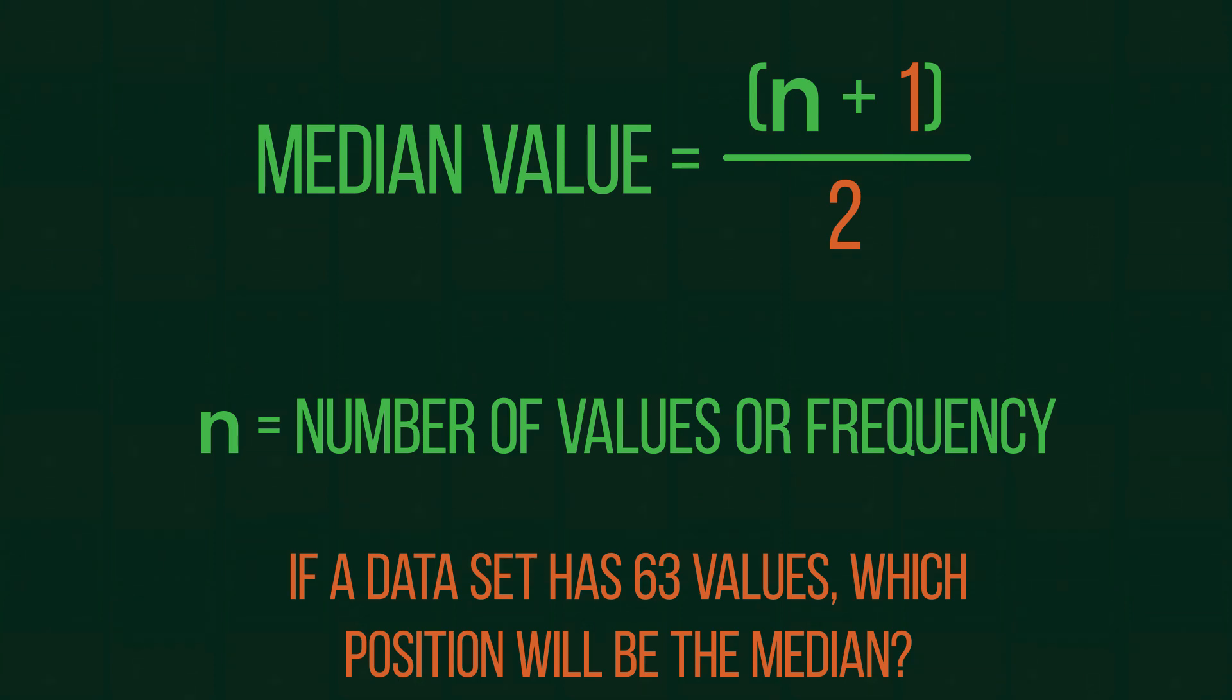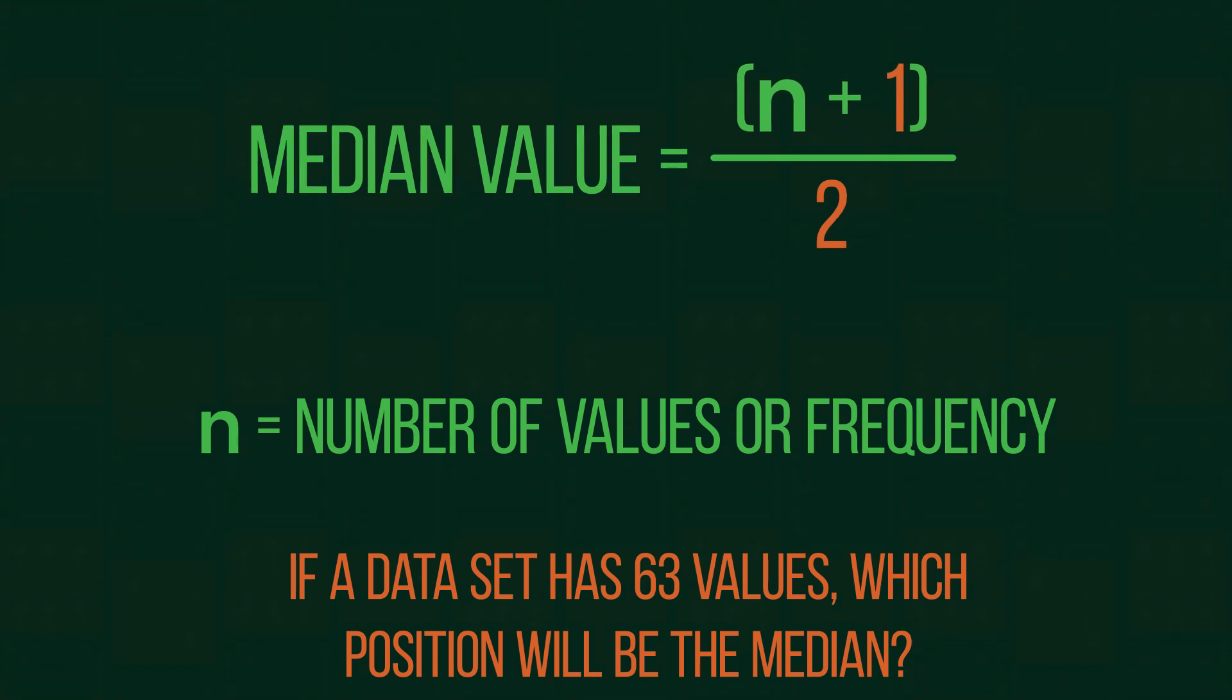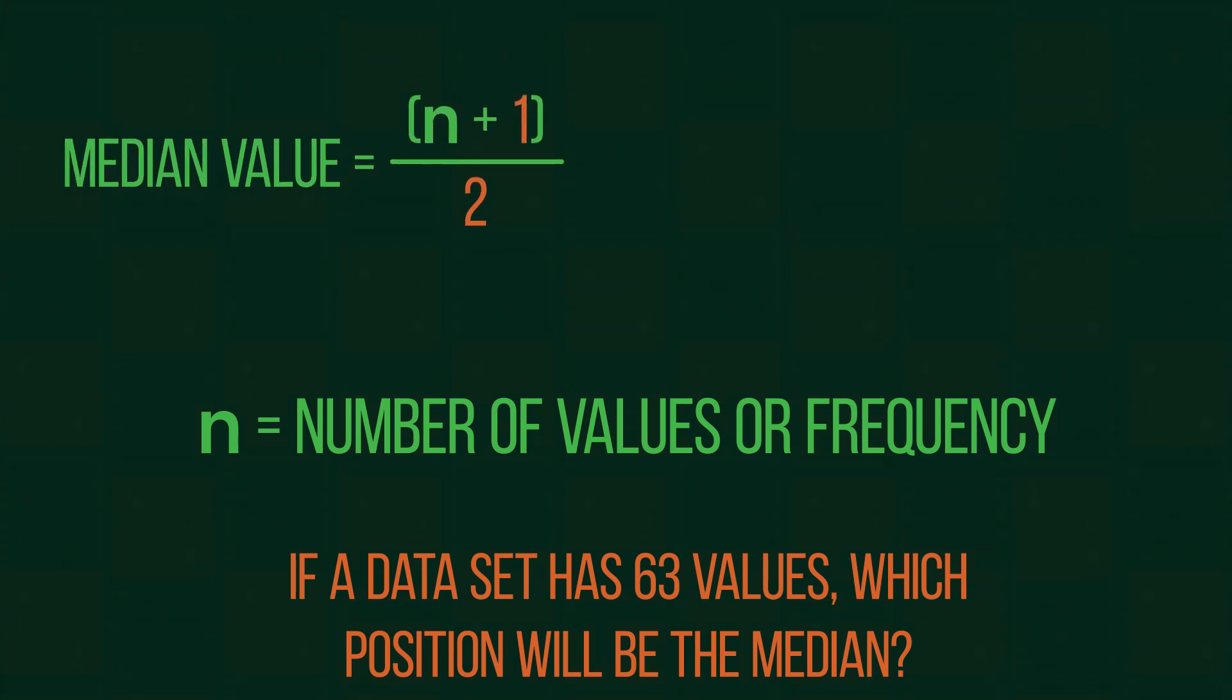Try for yourself: if a data set has 63 values, which position will the median be? Pause the video and have a go. Let's see how you did. If n takes the value 63, 63 add 1 equals 64, 64 divided by 2 gives us an answer of 32. So the median is in the 32nd position.